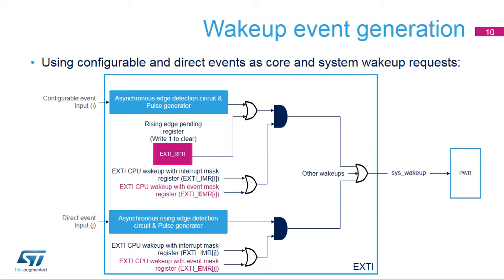The CPU wake-up signals generated by the EXTI block are connected to the PWR block and are used to wake up the system and CPU subsystem bus clocks. Both configurable and direct peripheral events are able to request a wake-up. A wake-up occurs when an asynchronous edge detection circuit has detected an active edge or a flag is set to 1 in the EXTI_RPR register. Software is expected to clear the flag in the EXTI_RPR register to disable the wake-up request when the source is a configurable event. For direct events, the flag is located in the peripheral unit. The wake-up indication is asserted when either interrupt or event generation is enabled, as shown by the OR gate combining EXTI_IMR and EXTI_EMR registers.